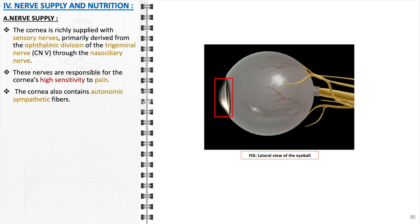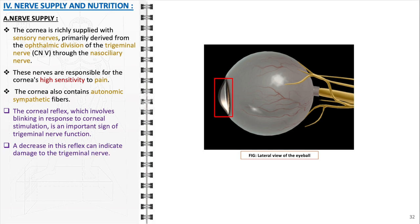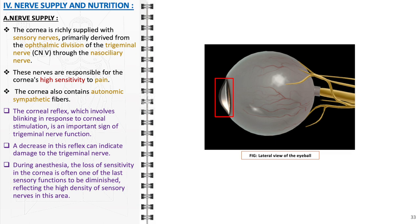In addition to sensory nerves, the cornea contains autonomic sympathetic fibers. These nerves do not contribute to sensation but play a role in other physiological responses, such as regulating blood flow. Clinically, the corneal reflex, involving blinking in response to corneal stimulation, is an important sign of trigeminal nerve function. A decrease in this reflex can indicate damage to the trigeminal nerve. During anesthesia, the loss of sensitivity in the cornea is often one of the last sensory functions to be diminished, reflecting the high density of sensory nerves in this area.